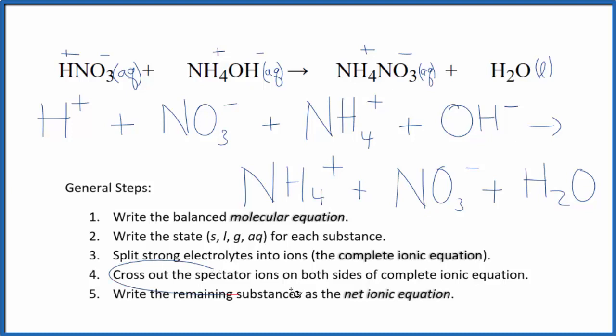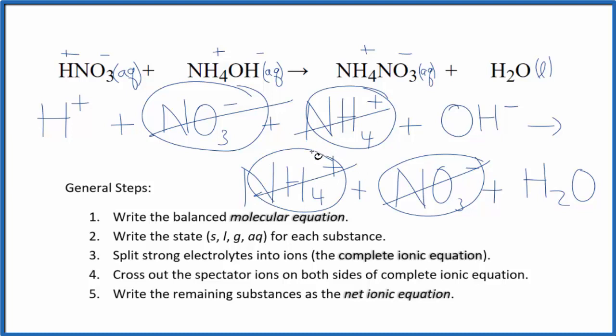Now we can cross out the spectator ions that appear on both sides of this complete ionic equation. There's a nitrate ion in the reactants and in the products, so we get rid of that. There's also an ammonium ion on both sides, get rid of that. What's left is the net ionic equation for HNO3 plus NH4OH.